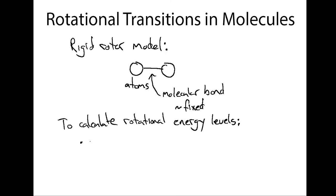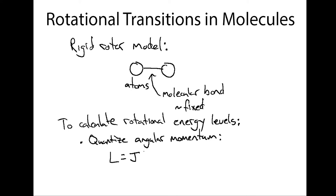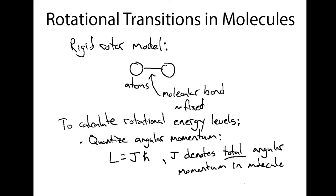The first step is the same we explored with the classical hydrogen atom: we need to quantize angular momentum. For molecules, we set the angular momentum in units of h-bar counted by the variable j, where j denotes the total angular momentum in a molecule. In practice, j can be the sum of the rotational angular momentum, the electronic angular momentum, and the spin angular momentum of any constituent atoms and particles. The total angular momentum of the molecule is conserved.